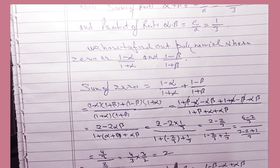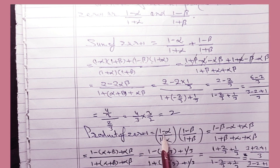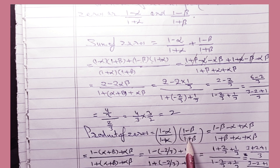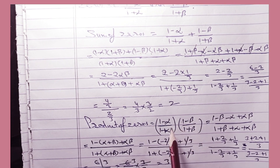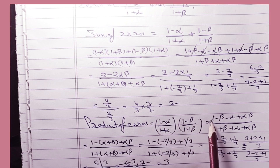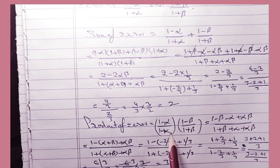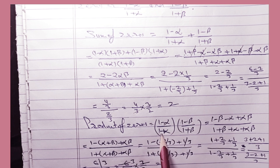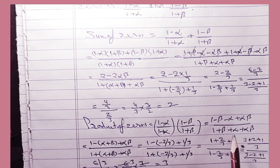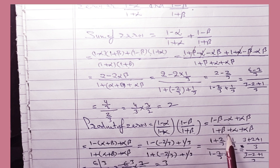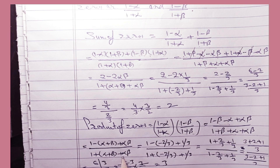Now find the product of zeros: [(1 - α)/(1 + α)] × [(1 - β)/(1 + β)]. Expanding numerator: (1 - α)(1 - β) = 1 - β - α + αβ. Expanding denominator: (1 + α)(1 + β) = 1 + β + α + αβ. Taking minus common in the numerator, we can form pairs: numerator = 1 - (α + β) + αβ, denominator = 1 + (α + β) + αβ.